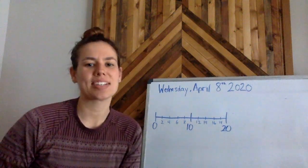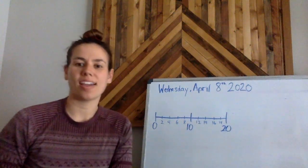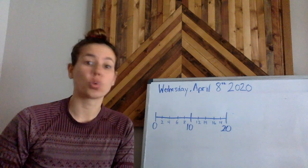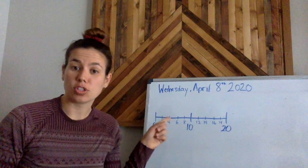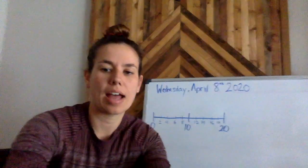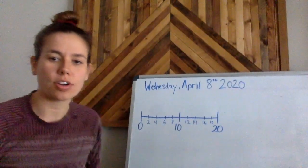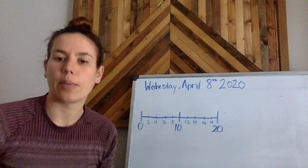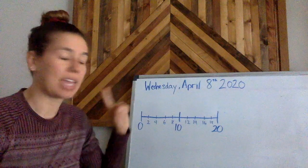Hi everyone! Happy Wednesday! Today we're going to be doing a journal entry or a story problem that has all to do with our number line. So behind me I have a number line drawn and I started at the number 0 and I went to the number 20 and I'm counting by twos.